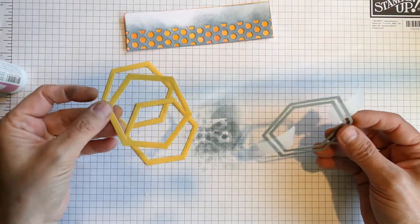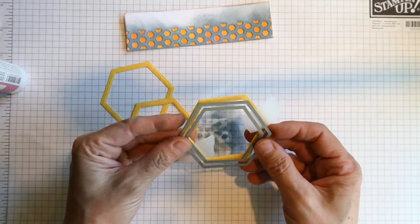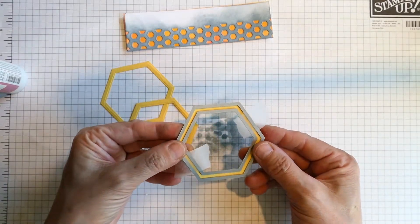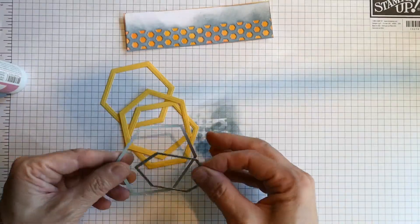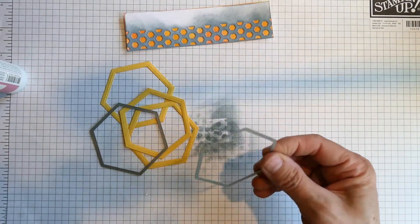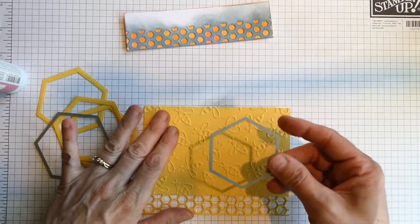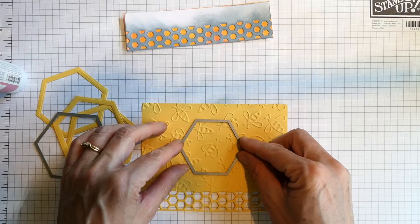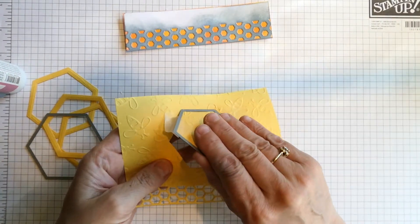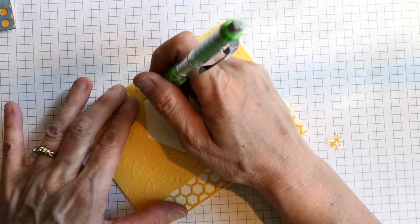Next I used these Studio Hexagon Layers, which are nestable, so there are a lot of different sizes in this set. Using two different sizes, I created frames. Then I used the smaller of the frame size and created the window for the card. I just centered it and die cut it.